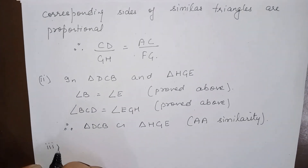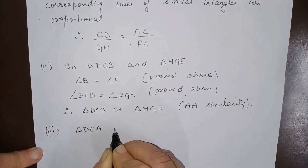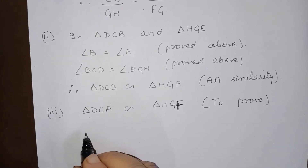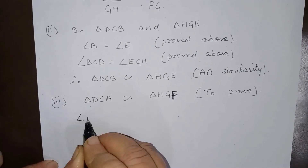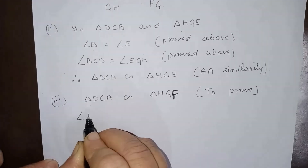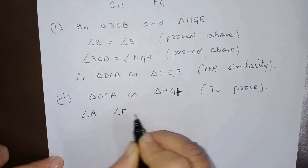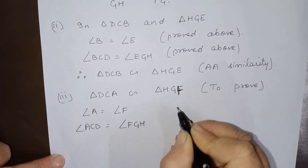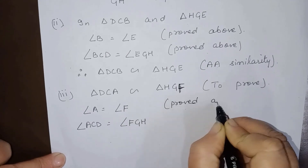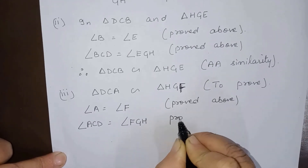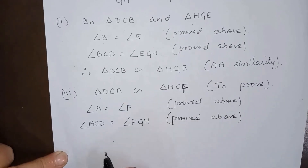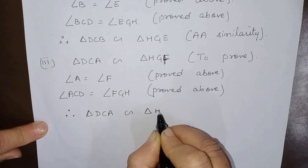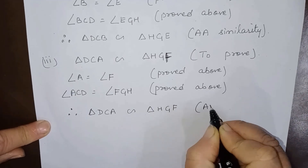For the third part, we have to prove that triangle DCA is similar to triangle HGF. In these two triangles, angle A equals angle F and angle ACD equals angle FGH. Therefore, triangle DCA is similar to triangle HGF by AA similarity.